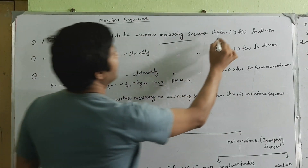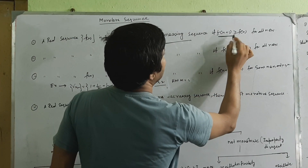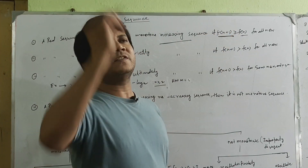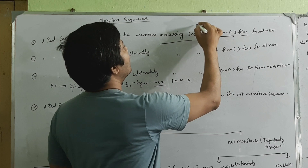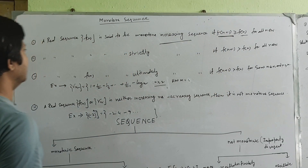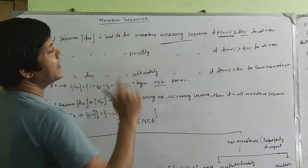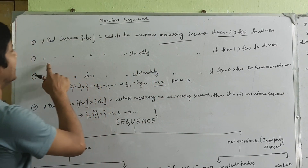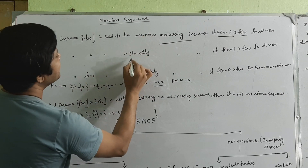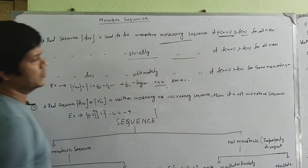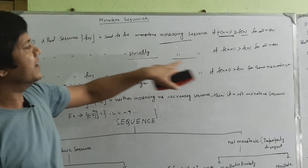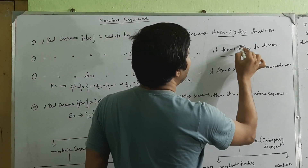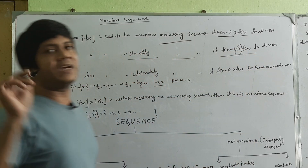If f(n) is greater than f(n), that is an increasing sequence. The decreasing sequence means f(n) is greater than a. This is monotonic increasing, and strictly monotonic increasing means strict inequality, not equality. This is the same expression highlighted in the same form.